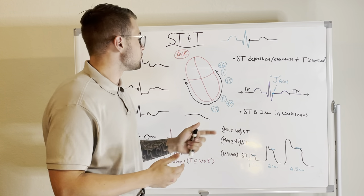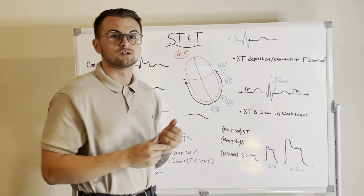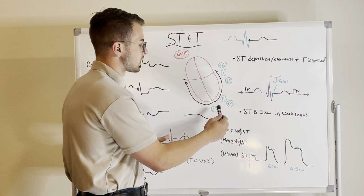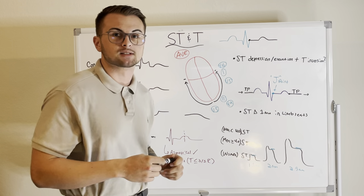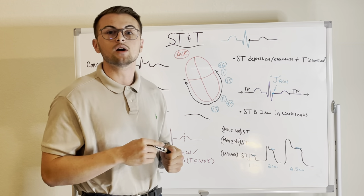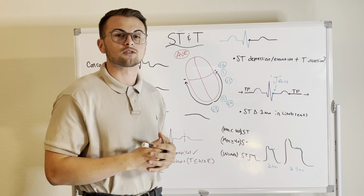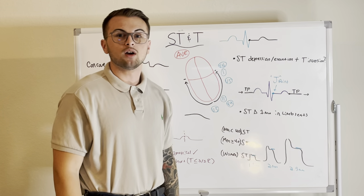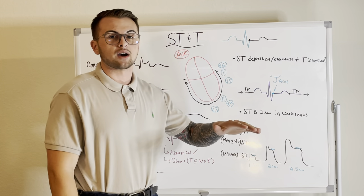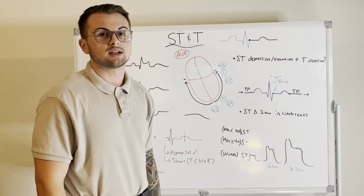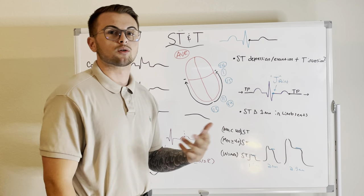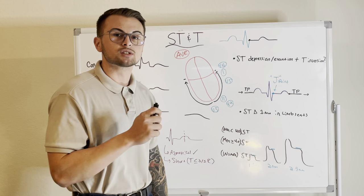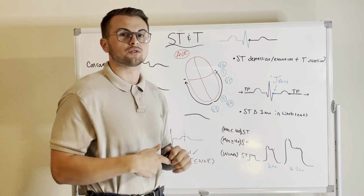The T wave correlates with the repolarization of the ventricles. We depolarize from base to apex and we repolarize from apex to base — that's a good test question. Any ST depression or ST elevation with or without a T wave inversion is usually indicative of some sort of ischemia or injury if the patient is symptomatic or if it's new onset.